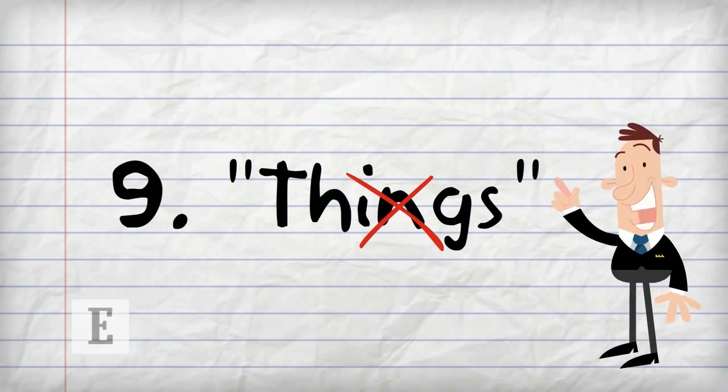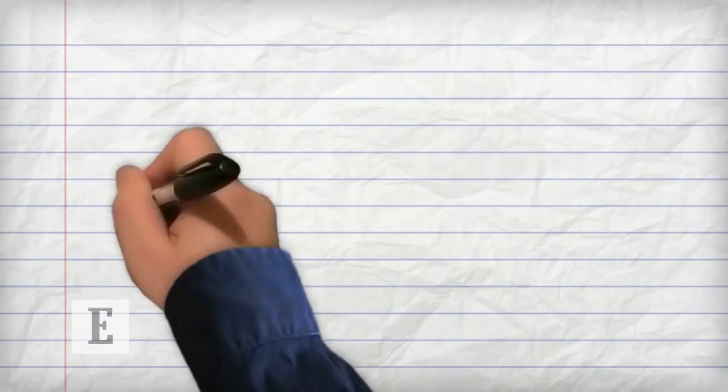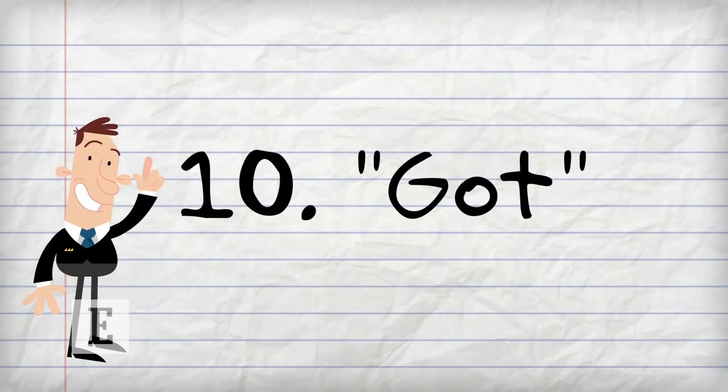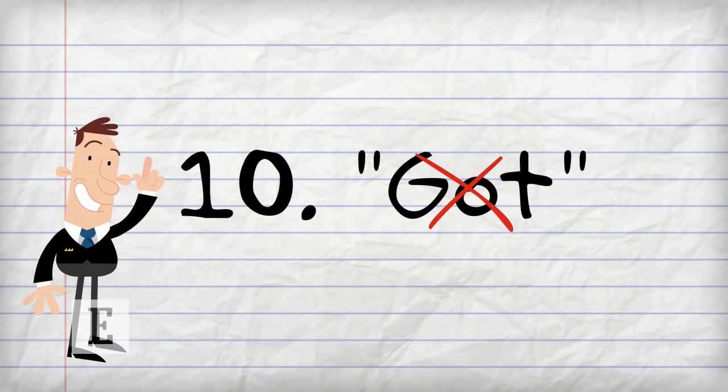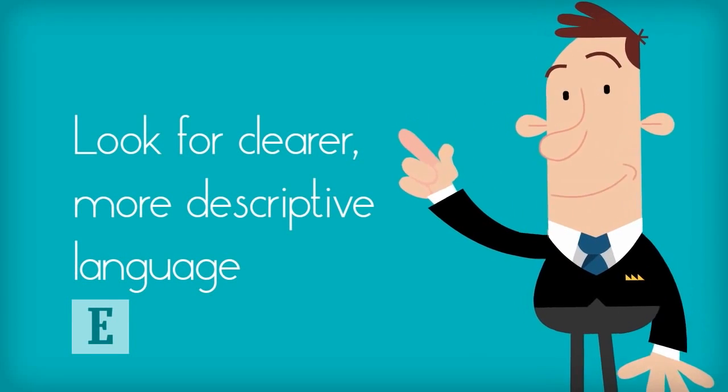Specificity makes for better writing. Ten: Got. Think of all the ways we use the vague word got in conversation. Though it's fine for conversation, in writing got misses valuable opportunities. Rather than writing a lazy word, look for clearer or more descriptive language.